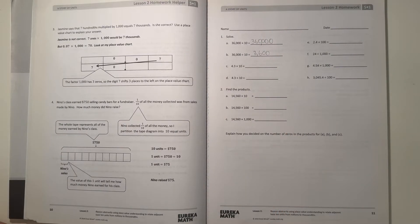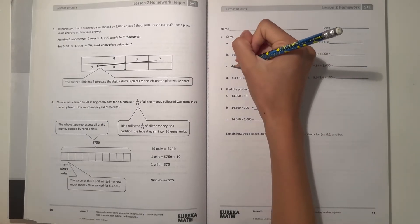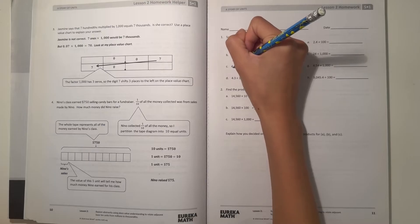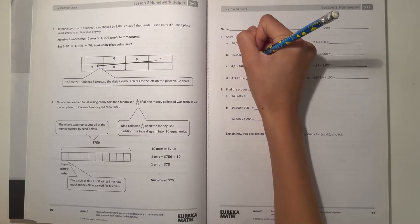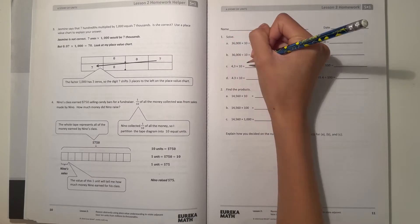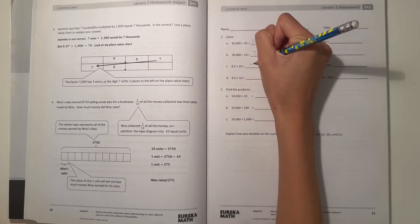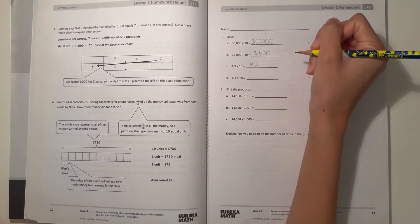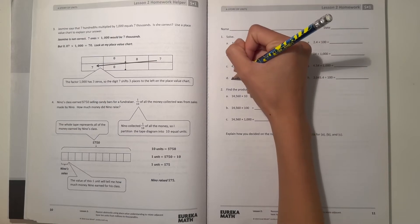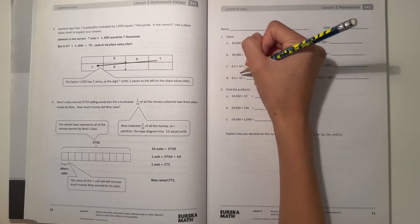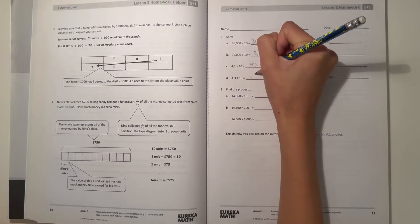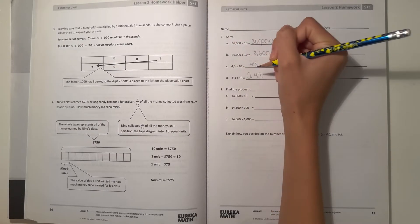And C, 4.3 times 10. We see a decimal point, so if we're multiplying by 10, it's getting bigger, then we move the decimal point 1 to the right because 10 has 1 zero. So that would be 43. And then 4.3 divided by 10, we're moving it 1 place to the left because we're dividing. So that would be 0.43.